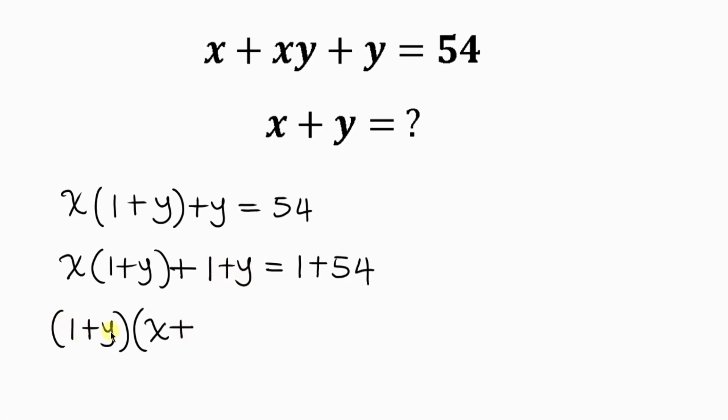Now notice that we have two factors, 1 plus y and x plus 1, that multiply to give 55. So our next step will be for us to write out the factors of 55. Let's talk about the first case. The factors of 55 are 55 times 1.